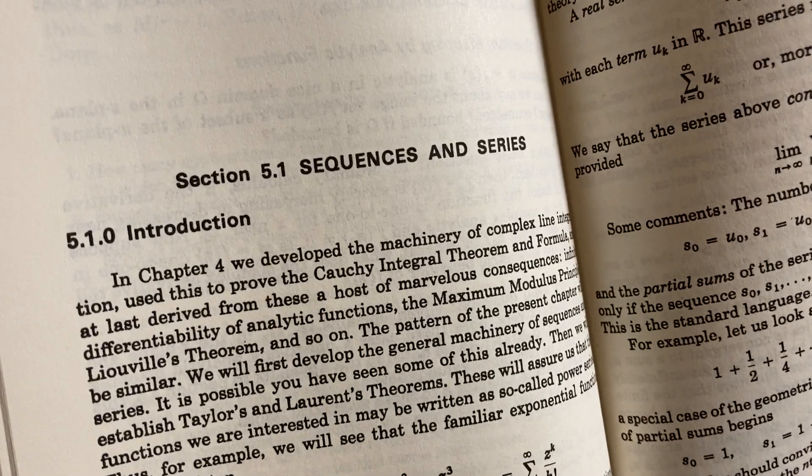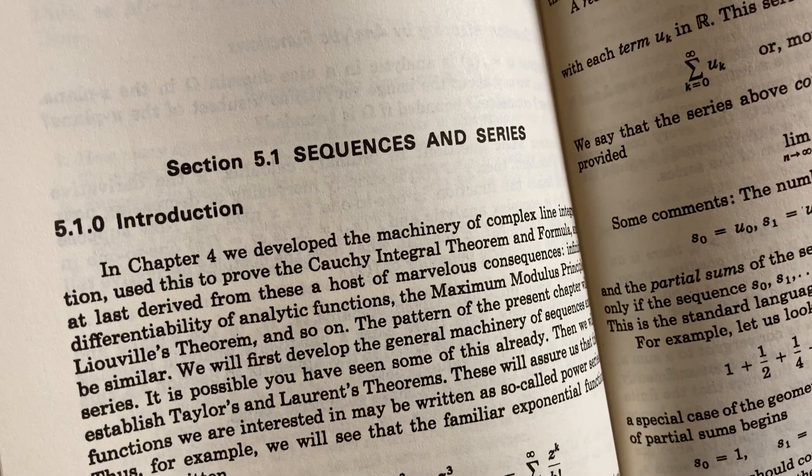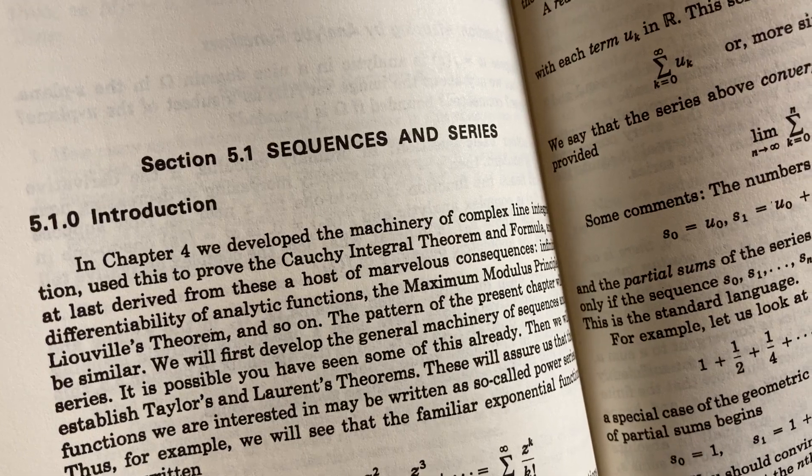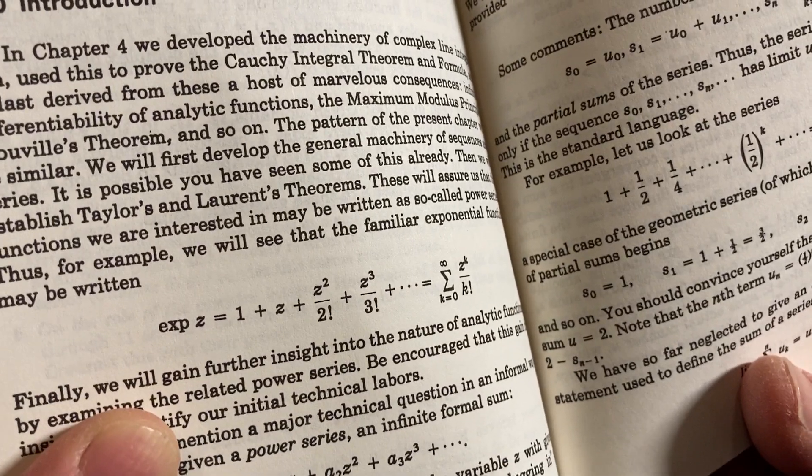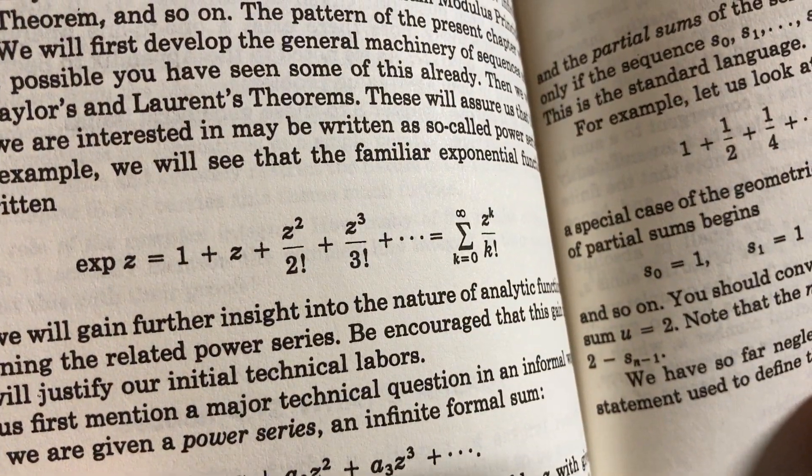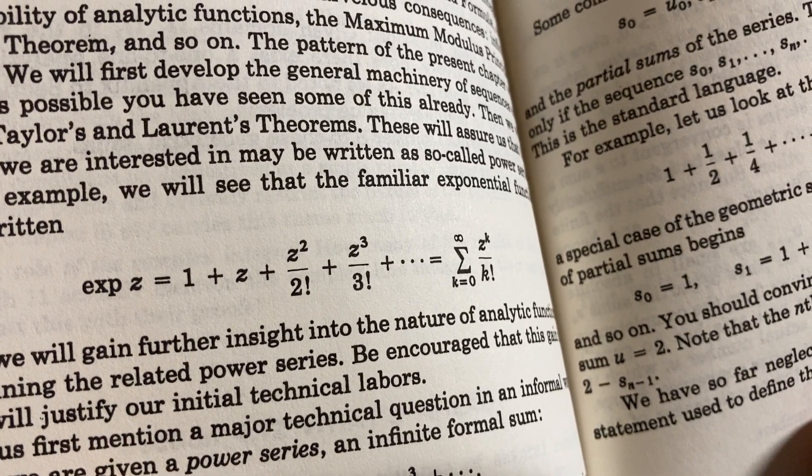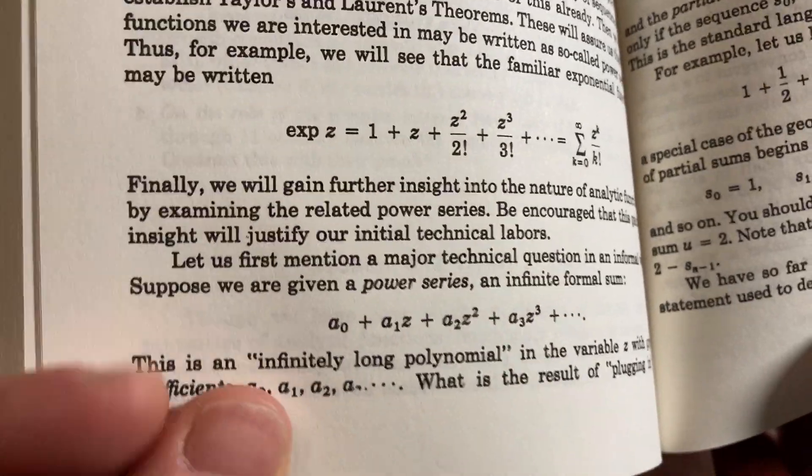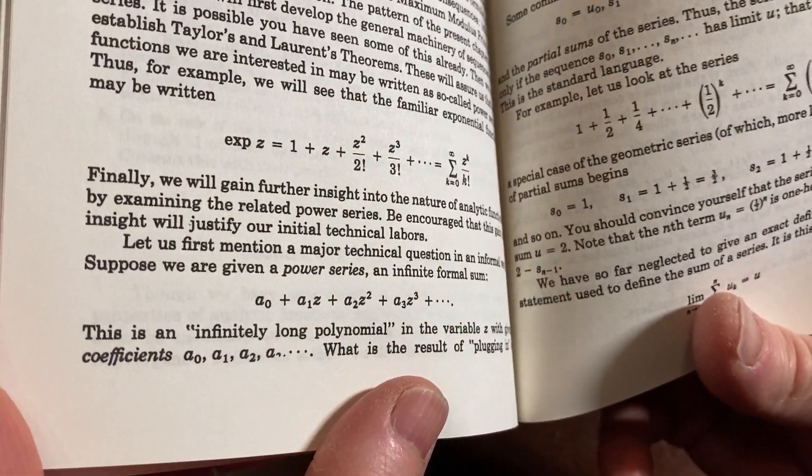It says, in chapter four, we developed the machinery of complex line integration. We skipped all that. Let's see if we can keep going. Use this to prove the Cauchy Integral Theorem and Formula, and at last derived from these a host of marvelous consequences. And then here, just the first math I see is this infinite series here, which we're already familiar with. If you know calculus, that's e to the x. Here, it's just exp z, so it's e to the z, where z is a complex variable. It could be a complex number.